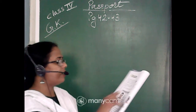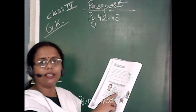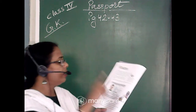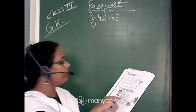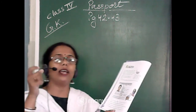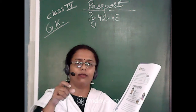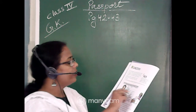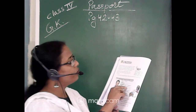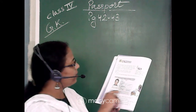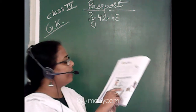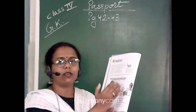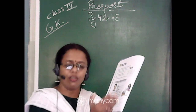Next, nationality has been mentioned, then gender — male or female — and then date of birth. Address is also mentioned, specifically the place of birth — the name of that city or place where you were born. There are three dates on the passport: first is date of birth, second is date of issue, and the third is date of expiry — when the passport expires and you have to renew it.